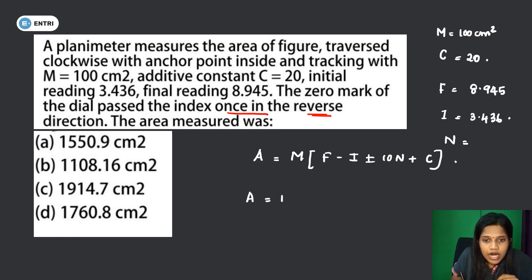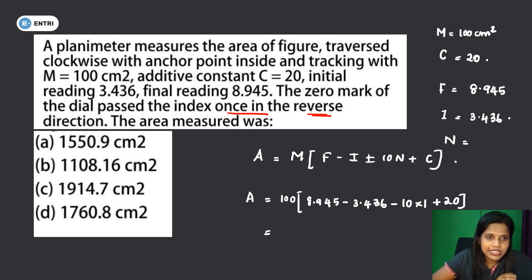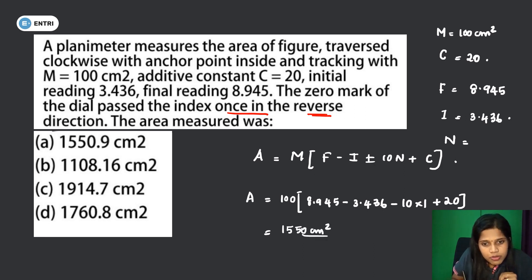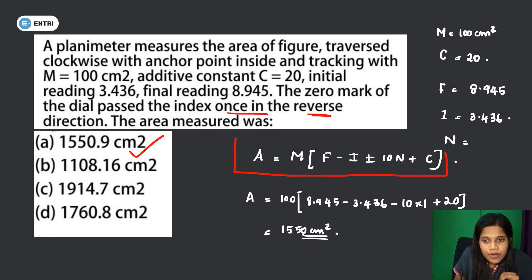The equation is: A = 100 × (8.945 − 3.436) − 10 × 1 + 20. Since it is reverse direction, n = −1. We will get the area as 1550 cm². Option A, 1550.9 cm², is the correct answer. Remember: Area = M × (F − I) ± 10n + C.